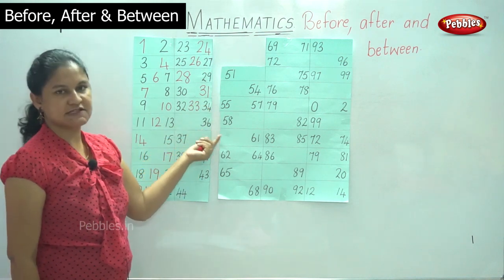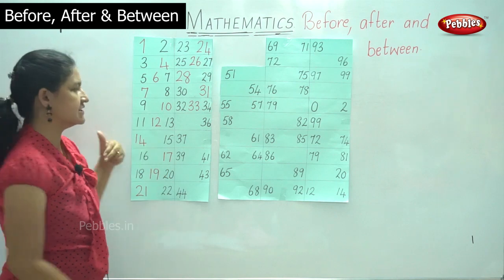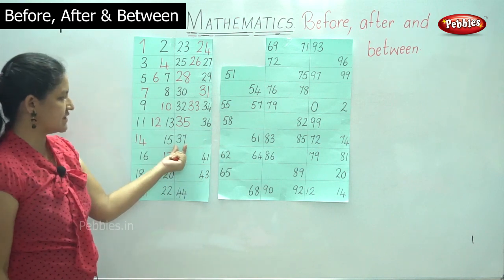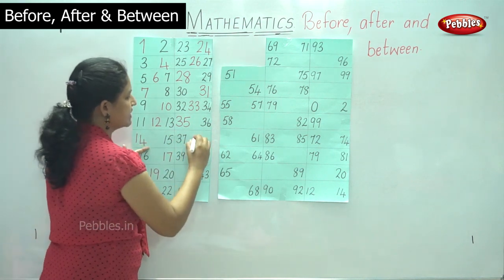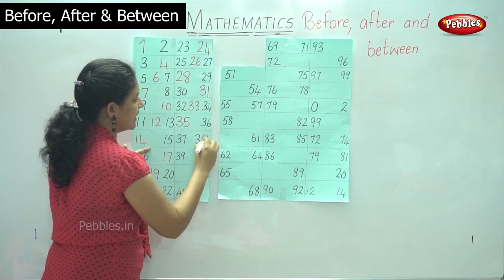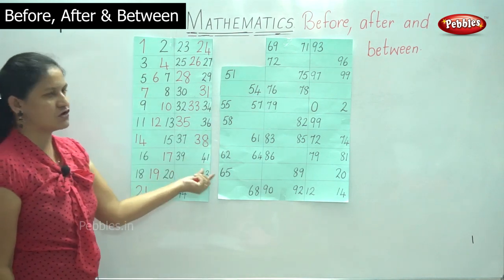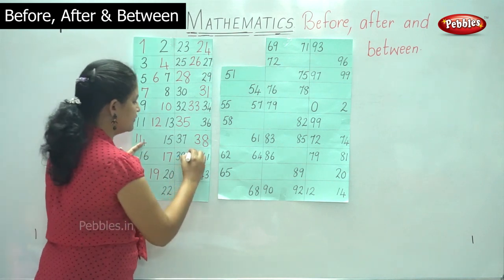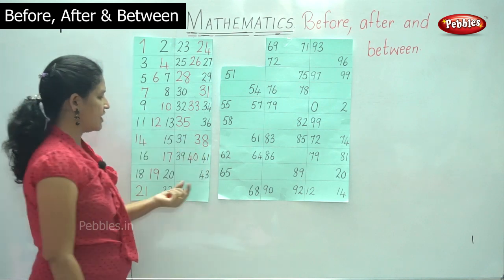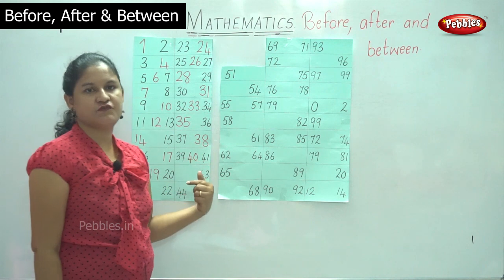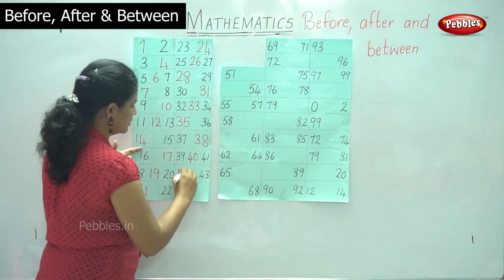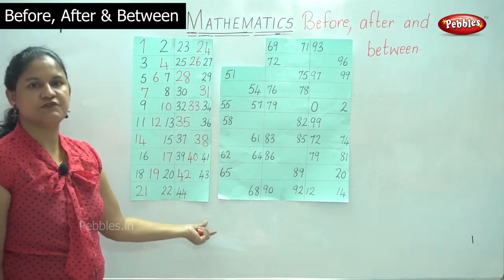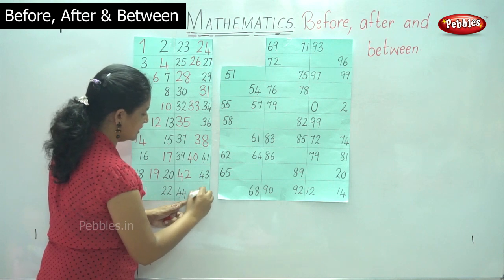Then we have number thirty-six, and what comes before thirty-six is number thirty-five. Then we have number thirty-seven, and what comes after thirty-seven is number thirty-eight. We have thirty-nine and forty-one, and what comes between thirty-nine and forty-one is number forty. Then we have number forty-three, and what comes before forty-three is number forty-two. We have number forty-four, and what comes after number forty-four is number forty-five.